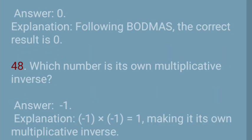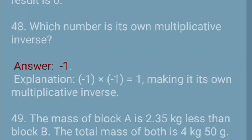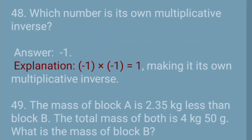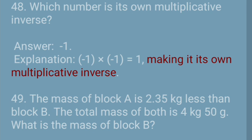Question 48: Which number is its own multiplicative inverse? Answer: −1. Explanation: −1 × −1 = 1, making it its own multiplicative inverse.